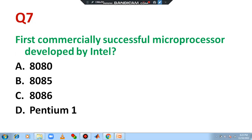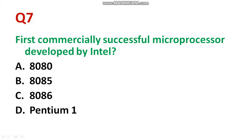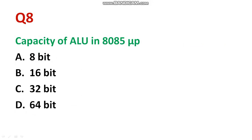Question number seven: 'What is the first commercially successful microprocessor?' The answer is the 8085. Please select option B. After implementing the 8085, Intel achieved a breakthrough because of its commercial success, which resulted in very good profit for the company.